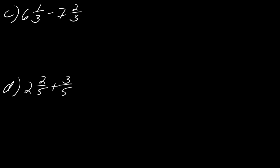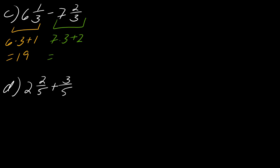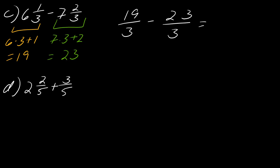Now I have two mixed numbers to convert. Six times three plus one equals 19. For the other one: seven times three plus two gives 21 plus two, which equals 23. So these two fractions become 19 over three minus 23 over three. Nineteen minus 23 is negative four, so the answer is negative four thirds.